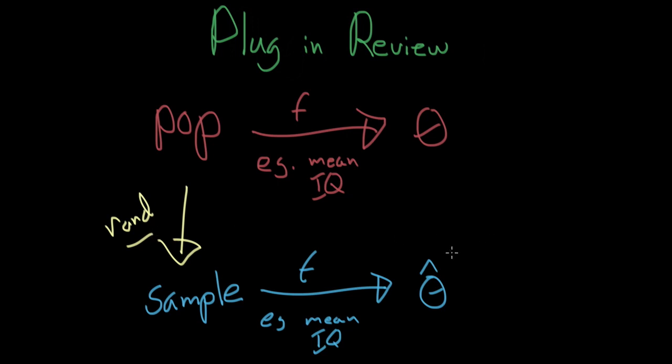The second assumption that we made, to bring this estimate close to the true parameter, was the plug-in principle estimate. This was basically saying that theta hat, the mean IQ of our sample, was going to be incredibly close to the population, or at least the best estimator of the population's mean IQ as we could get. This assumption requires that we have a random sample in the first place. It also requires one more thing: it requires n to be pretty big. These are the two assumptions we've covered thus far.